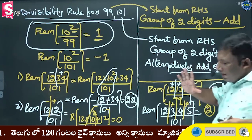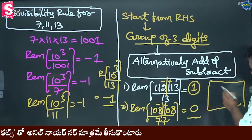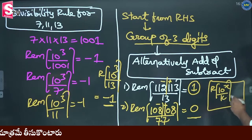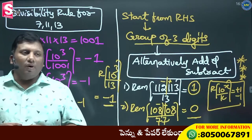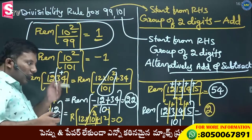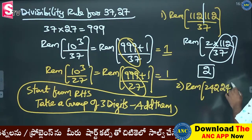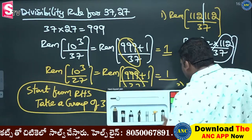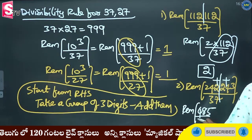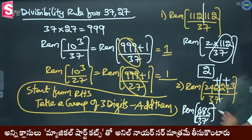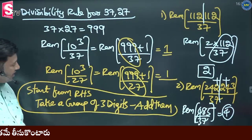Divisibility rule: 242243 divided by 37. For 37 and 27 divisibility rule, take a group of 3 digits and add them. 242 plus 243 = 485. Divide by 37: 37 ones are 37, 15, 37 threes are 111. Reminder 4. So answer is 4.